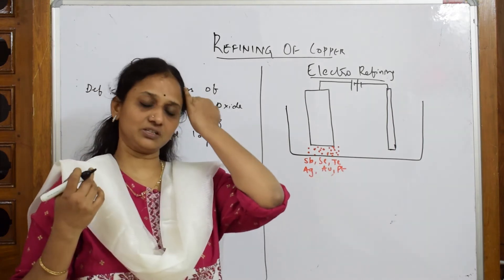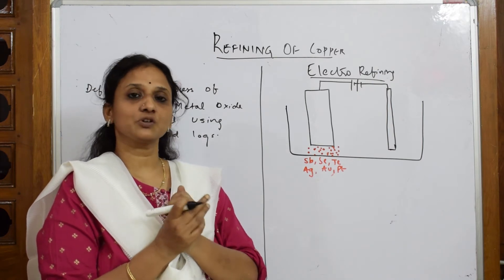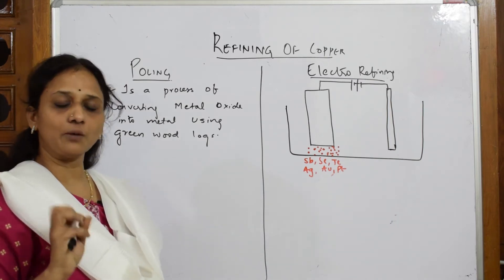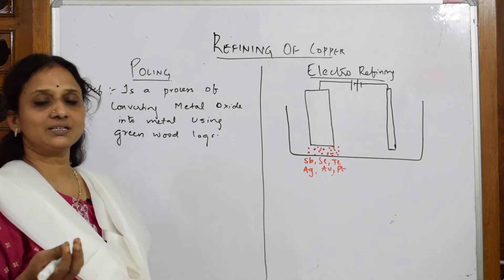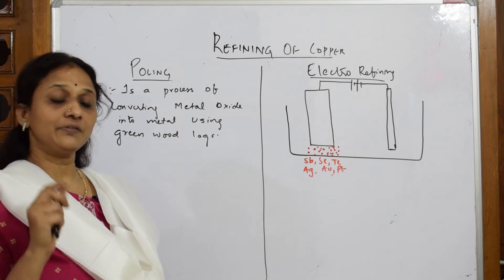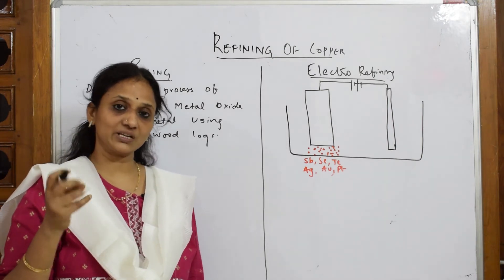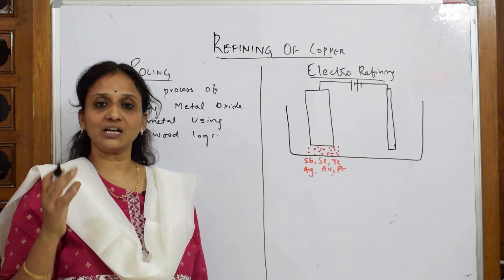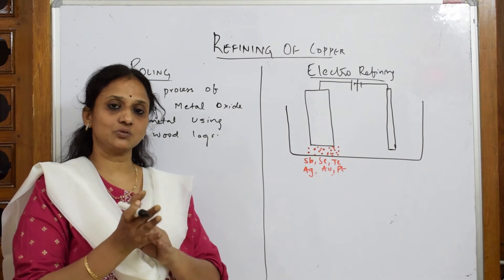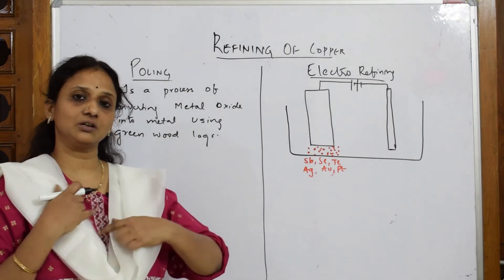Earlier, when electro-refining was not used, they used to take the copper oxide obtained in the process and sprinkle carbon powder on it. Carbon powder acts as a reducing agent. After sprinkling, they used to collect green trees or green wood, and the sap inside that green wood was placed on the wooden logs along with the metal and carbon powder.